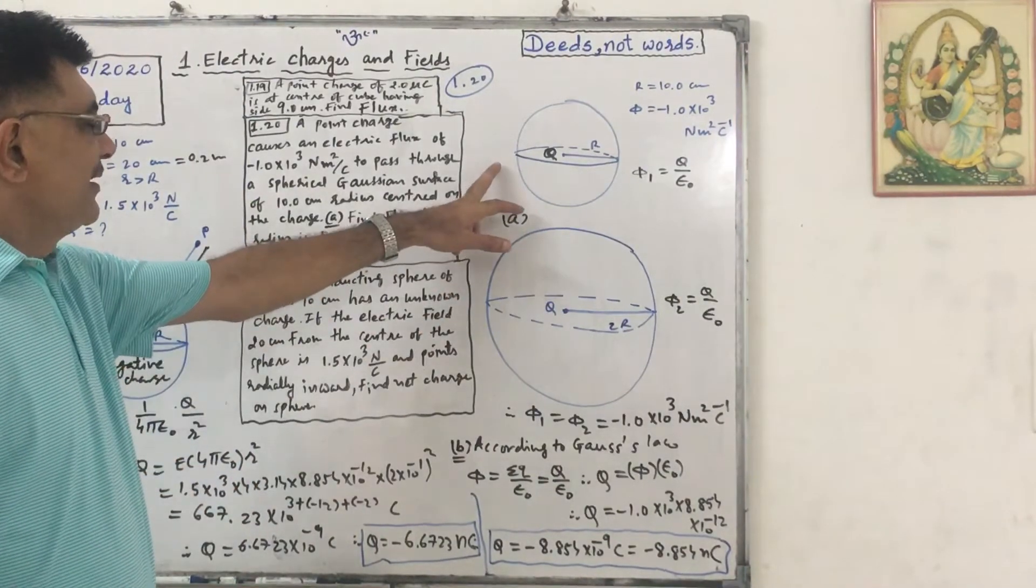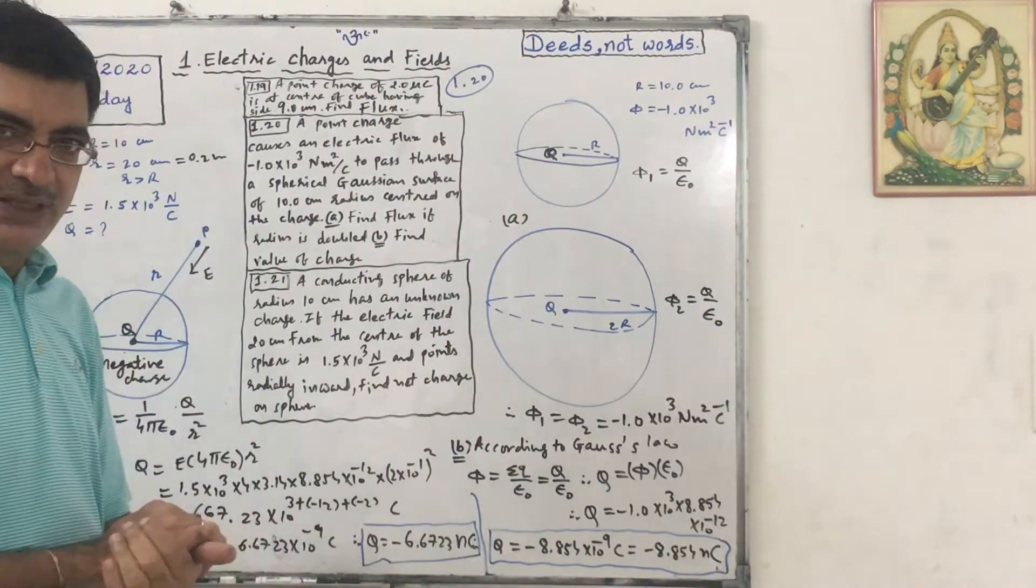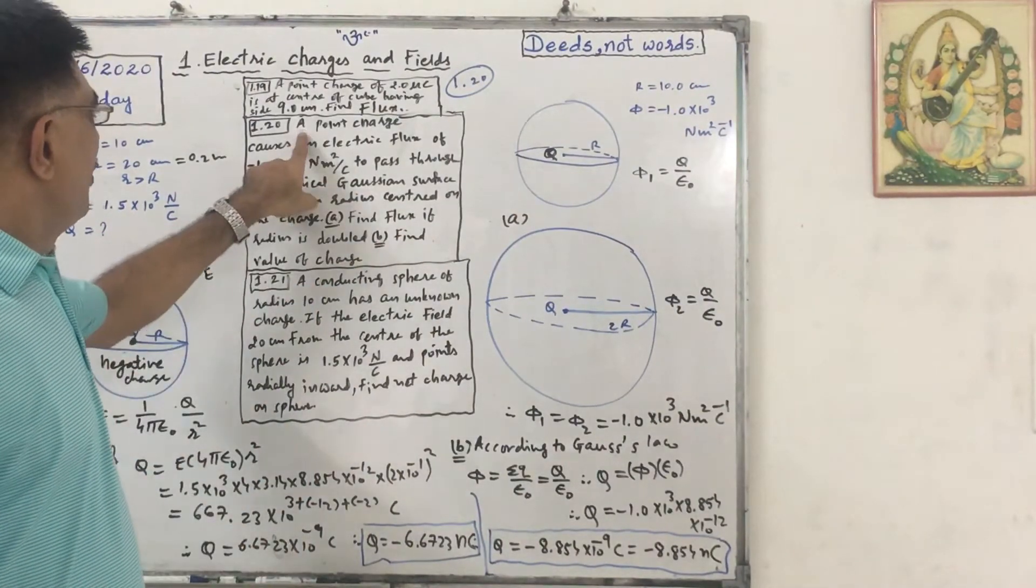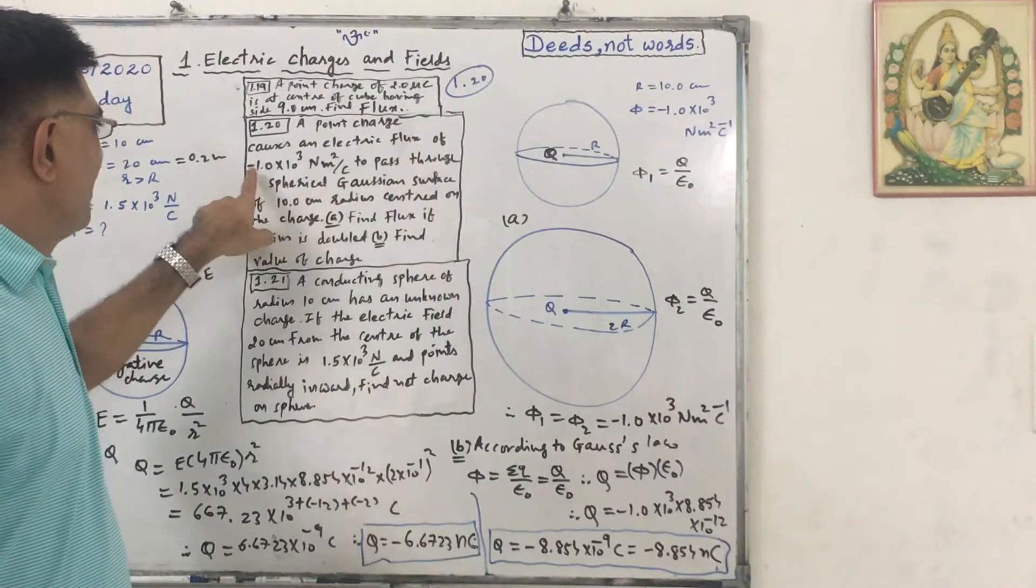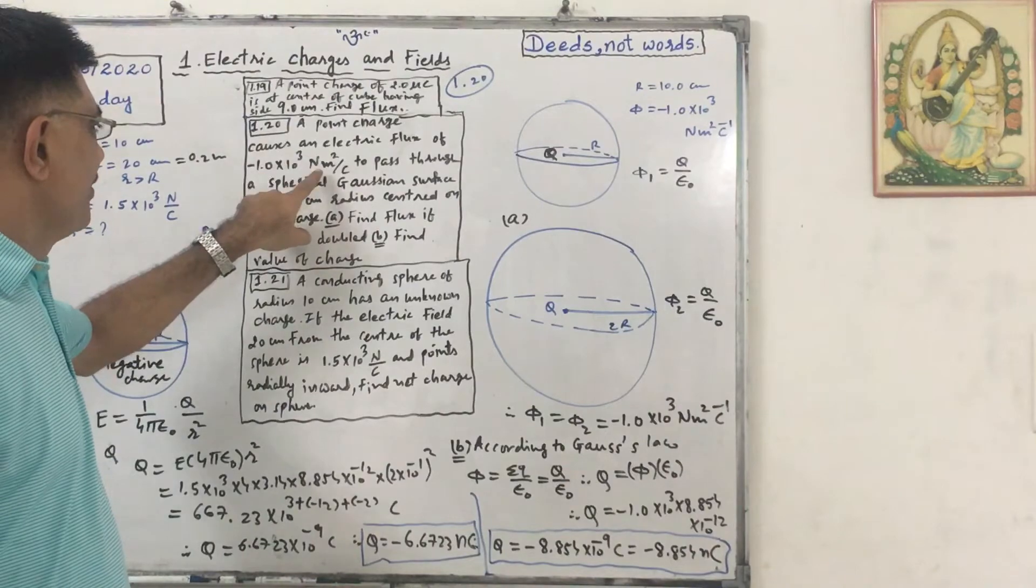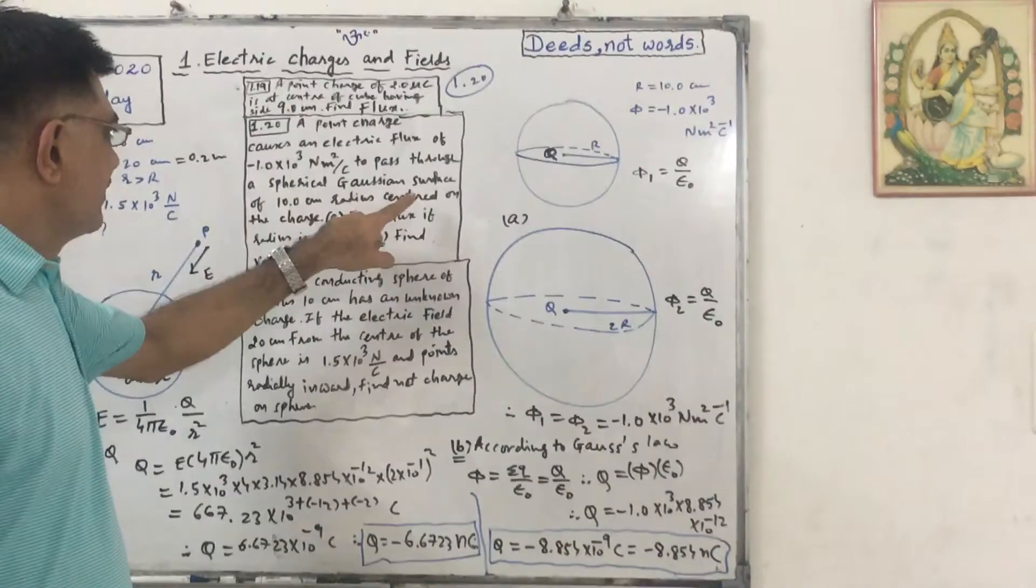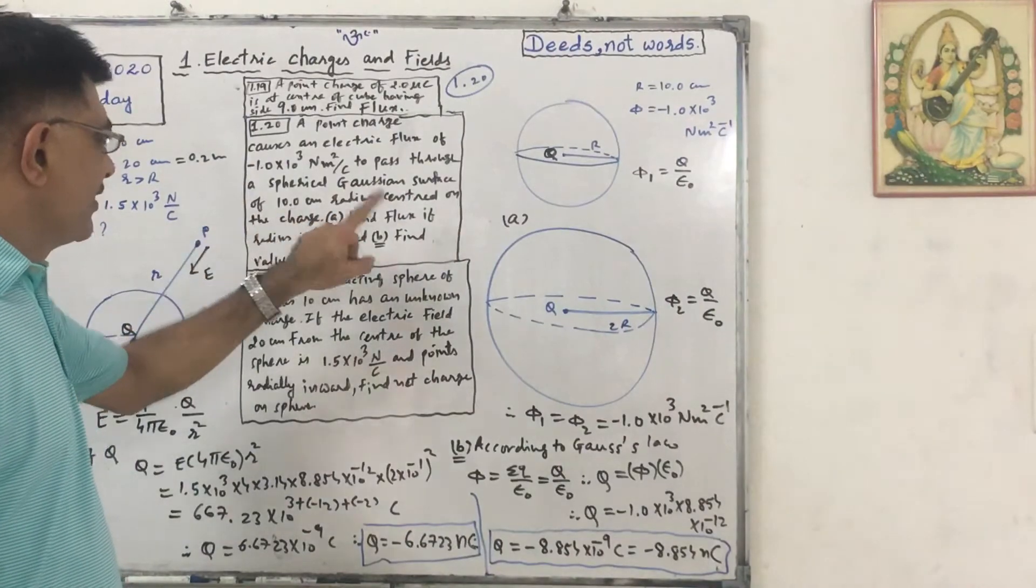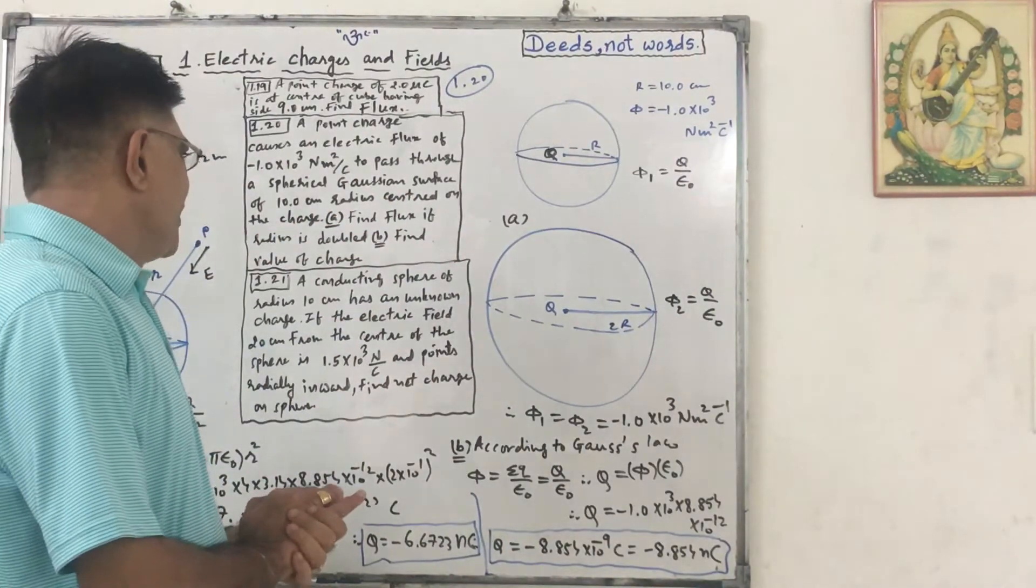This is problem number 20 of Textual Exercise. A point charge causes an electric flux of minus 1.0 into 10 raised to 3 Newton meter square per Coulomb to pass through a spherical Gaussian surface of 10.0 centimeter radius centered on the charge. Find flux if radius is double.